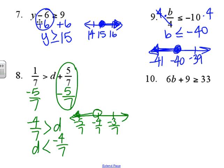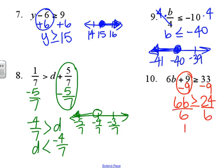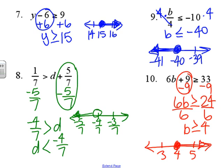Number ten is a two-step. Start by subtracting nine — you get 6b is greater than or equal to 24. Divide by 6: b is greater than or equal to 4. So that's a closed circle with the ray going to the right.